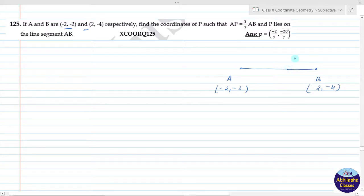Then we will say that there is point P on line segment AB. This is the point and we are going to assume that the coordinates are (x, y).